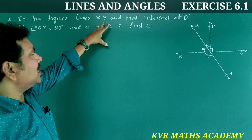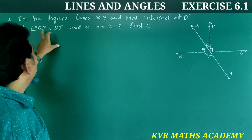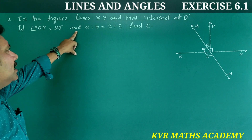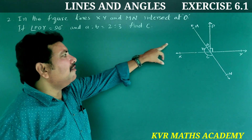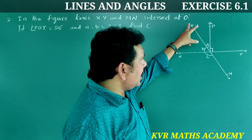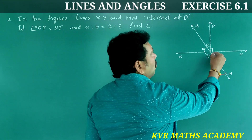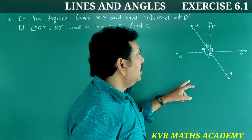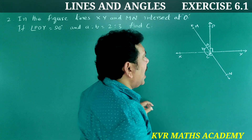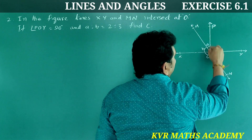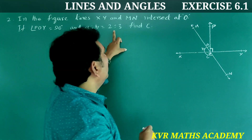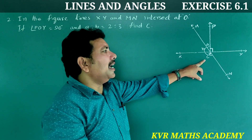In the figure, lines XY and MN intersect at O. If angle POY is equal to 90 degrees and A is to B is equal to 2 is to 3, find C. Lines XY and MN intersect at O. Angle POY is equal to 90 degrees, and the ratio A to B is equal to 2 to 3. Find C.